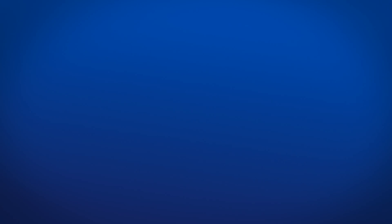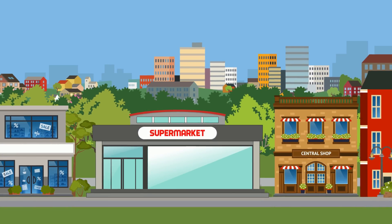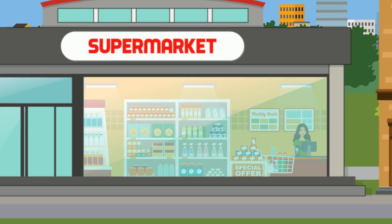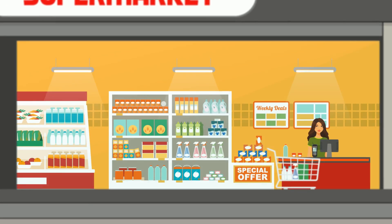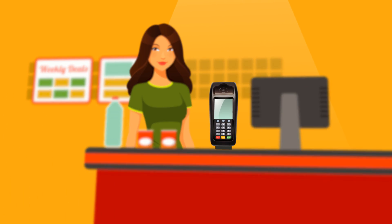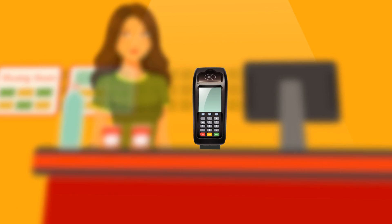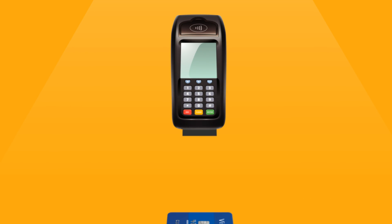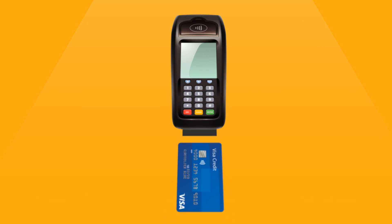Every electronic payments transaction can be divided into three steps: Authorization, Clearing, and Settlement. Let's see what happens during a typical transaction at a local grocery store. Authorization, the first step in the process, begins at checkout, when the consumer swipes, taps, or inserts a card into the store's point-of-sale terminal.